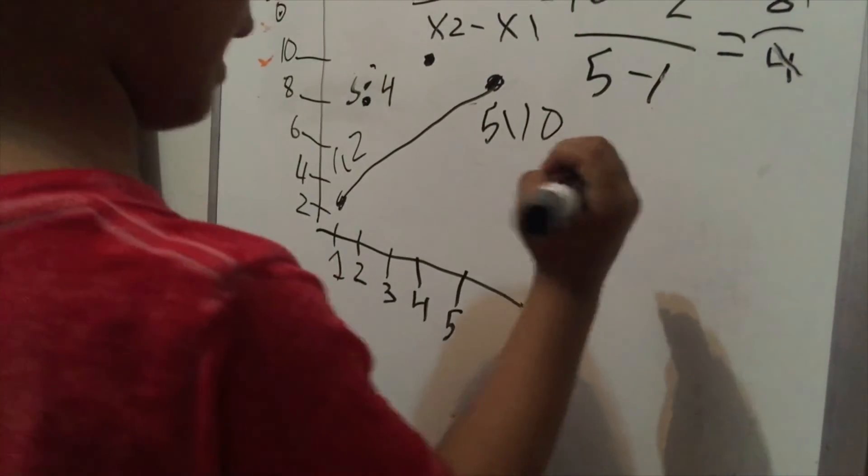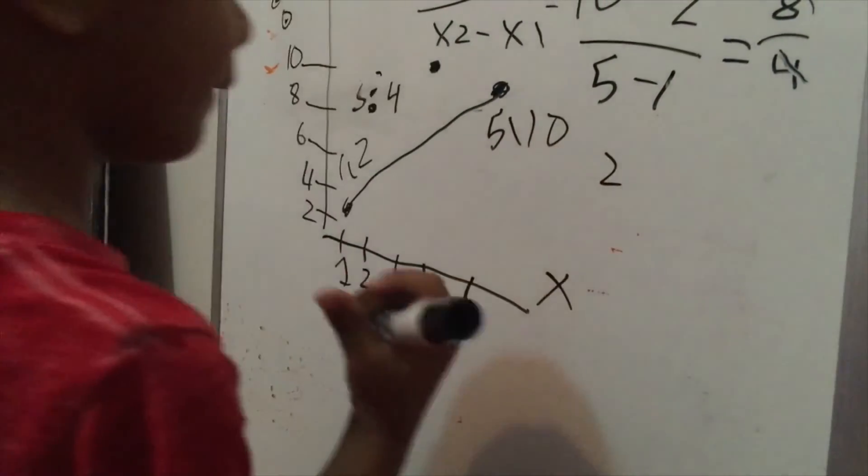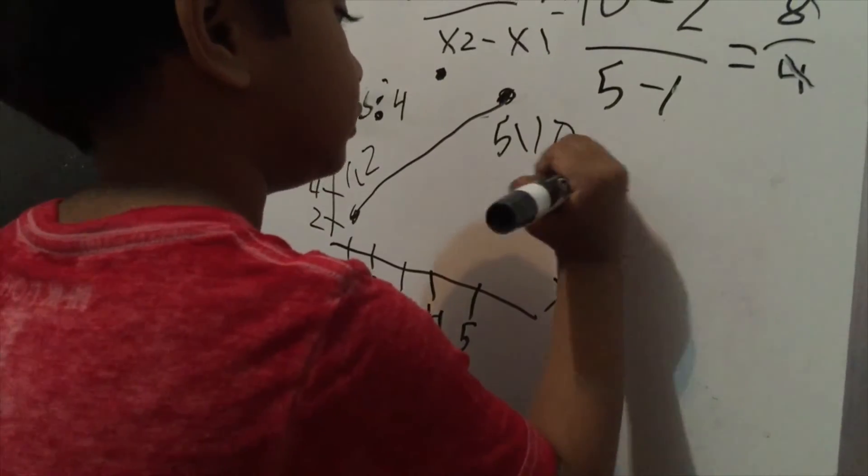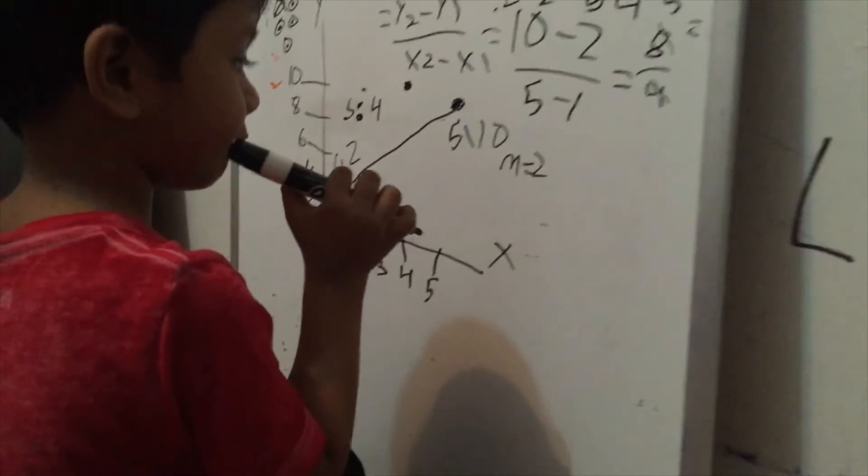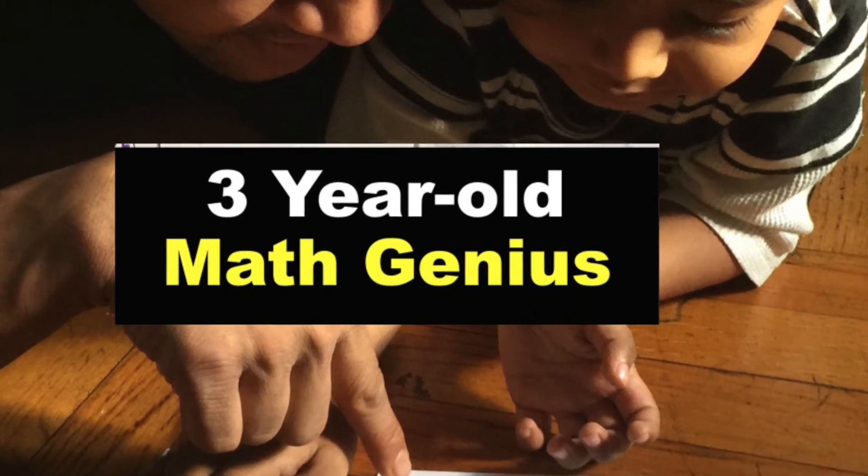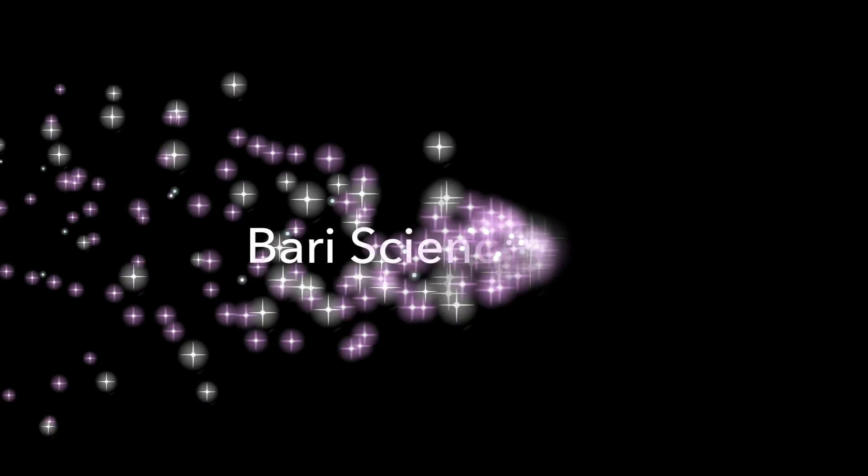Now this line has slope 2, which is M equals 2. I'll see you next time. Bye.